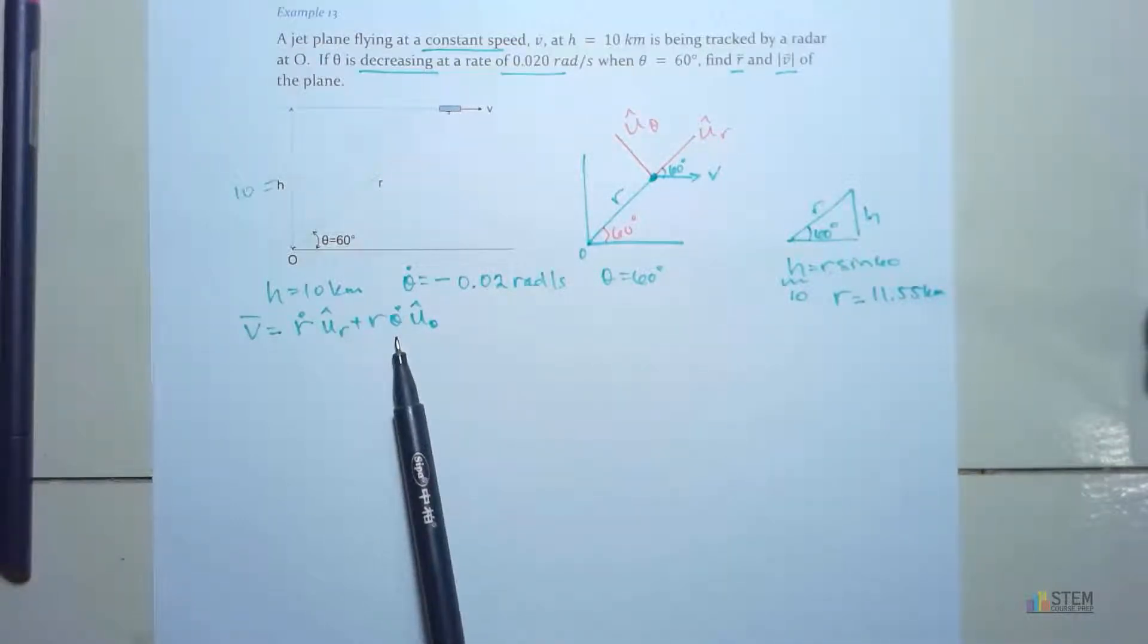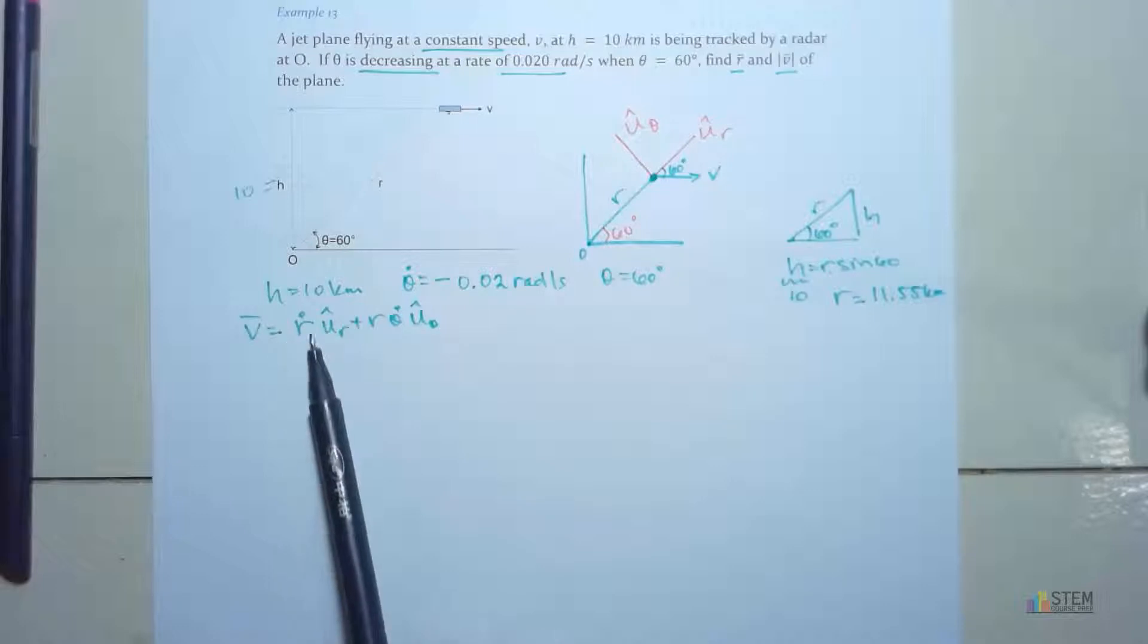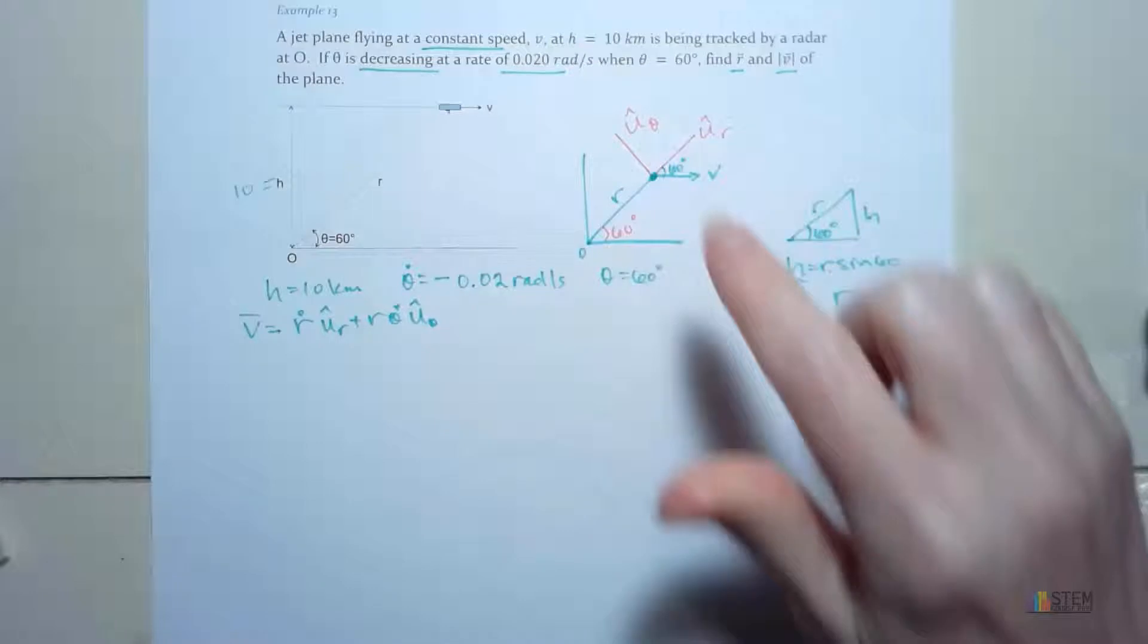Now if we look here, I need R, and then I need theta dot. I've already got theta dot. So now using that, let's see what we can do. I don't know anything about R dot either, if you notice. So I need to do something to figure out how to find this velocity. Because I can't just take the magnitude of this, because I don't know R dot at this point. So let's go ahead, and what we're going to do is, let's look up here at this drawing.